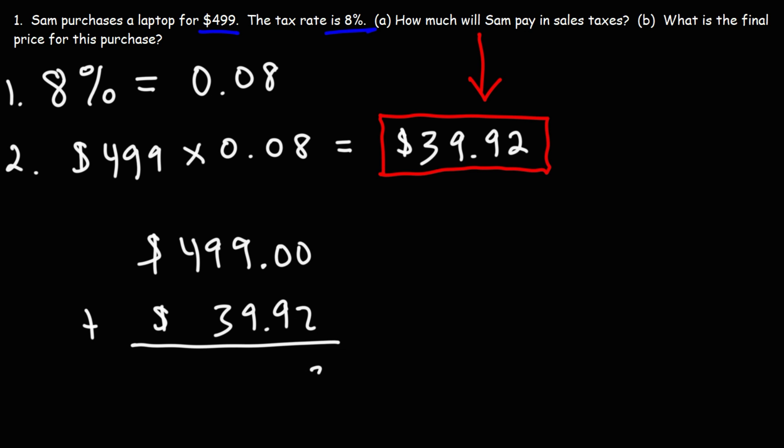So this is going to be 2, 9. 9 plus 9 is 18. We'll write the 8, carry over the 1. 1 plus 9 is 10, plus 3, that's 13. We'll write the 3, carry over the 1. 1 plus 4 is 5. So the total amount that Sam is going to pay for this laptop is $538.92.